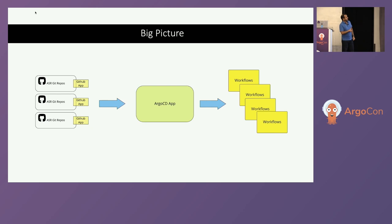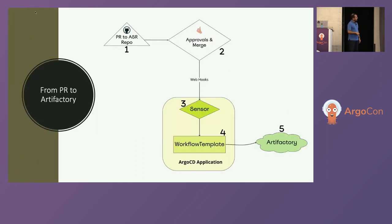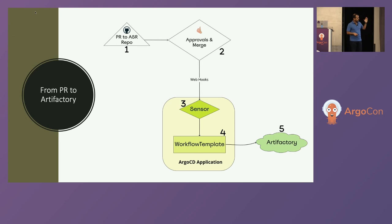The big picture is you have an Argo CD application that contains all the definitions of the workflows you use to release. Every ASR Git repo, whenever there's a merge happening, it's going to send events to the Argo CD app, which triggers a workflow. The journey from a PR to Artifactory: you raise a PR, maintainers are happy, you merge it, events start flowing to the Argo CD application. It has two main components — a sensor and a workflow template — which intercept GitHub events and trigger an appropriate workflow that goes to Artifactory.